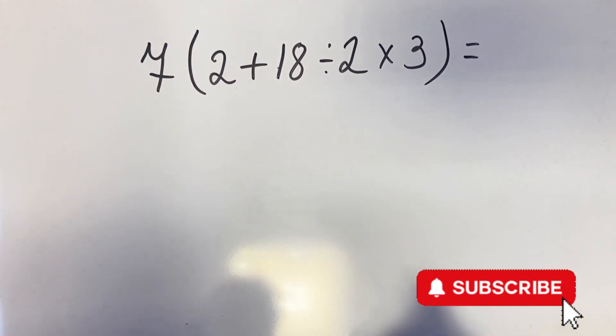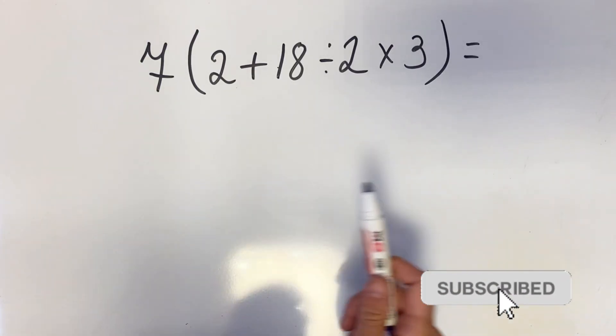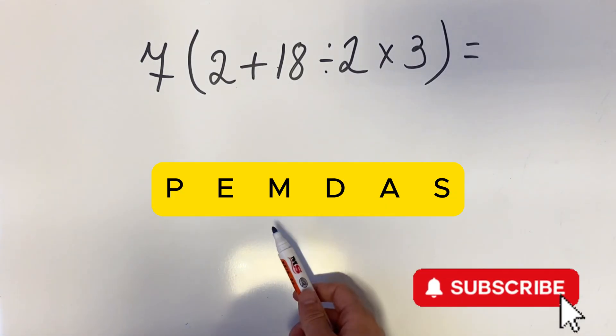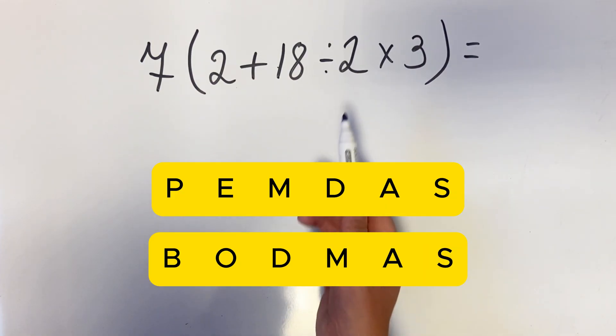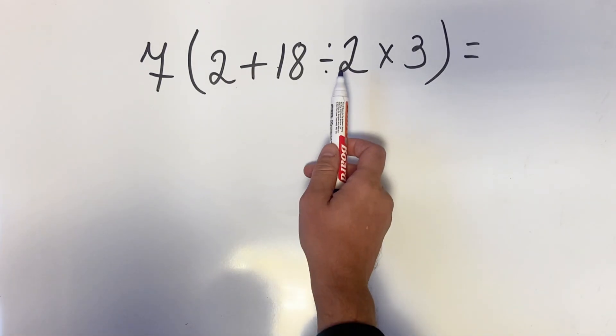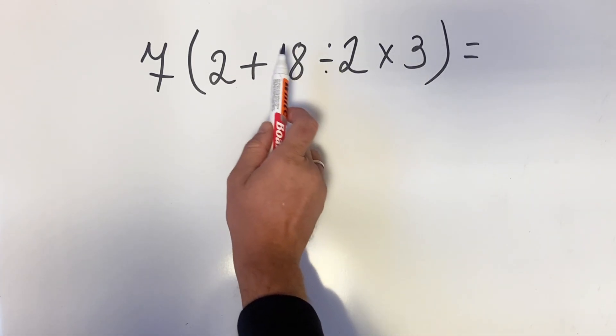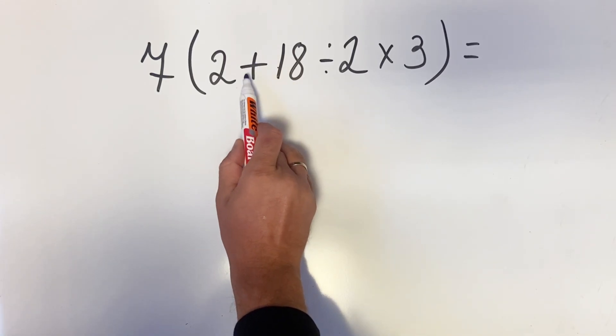To solve this equation we must follow the order of operations PEMDAS or BODMAS. This means we need to tackle what's inside the parenthesis first where division and multiplication have priority over addition.